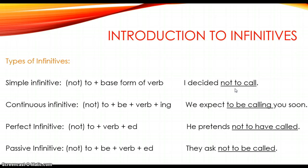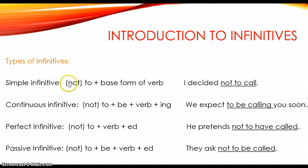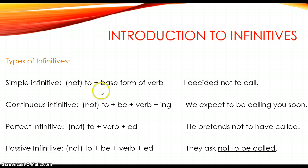Infinitives involve combining 'to' plus a form of a verb. We can also use 'not' in front to give it a negative meaning. The form of the verb is going to change in each of these different types. First we're going to look at simple infinitives, which is 'to' plus the base form of the verb.